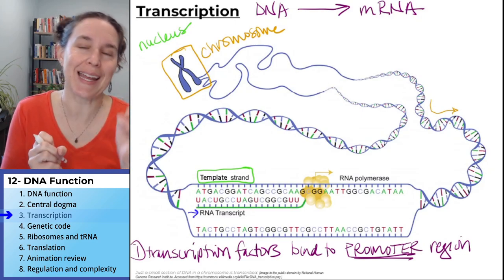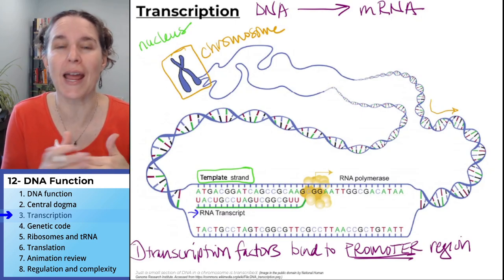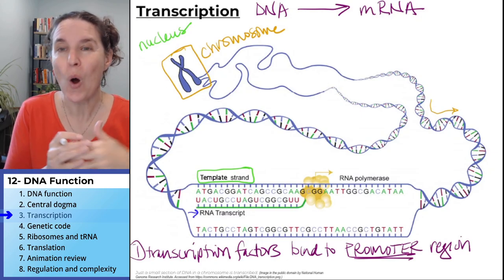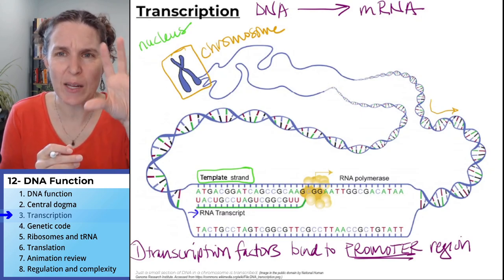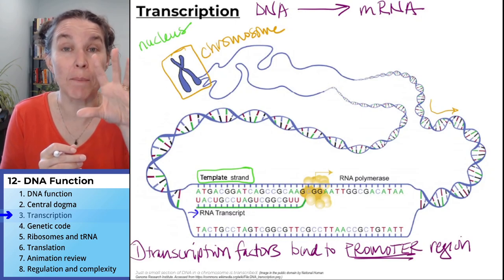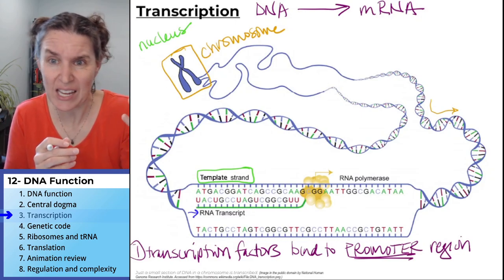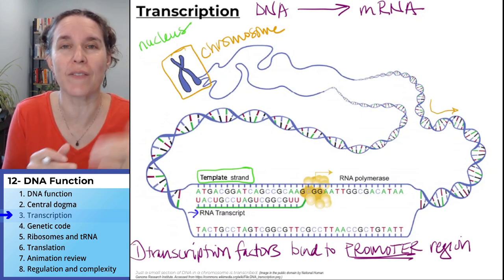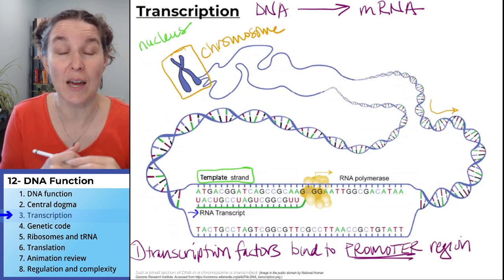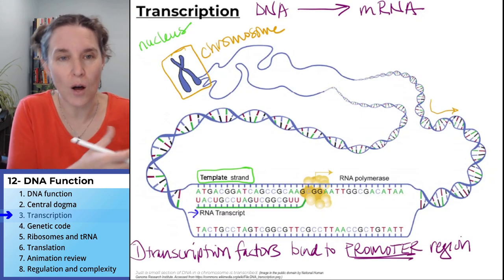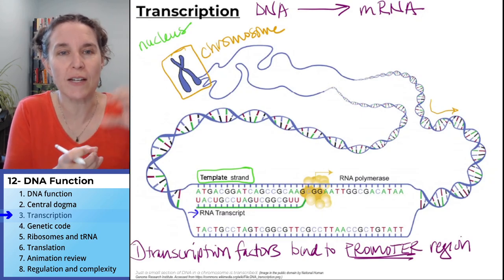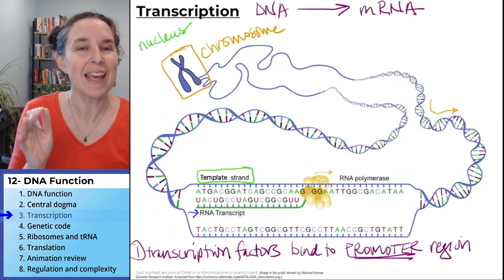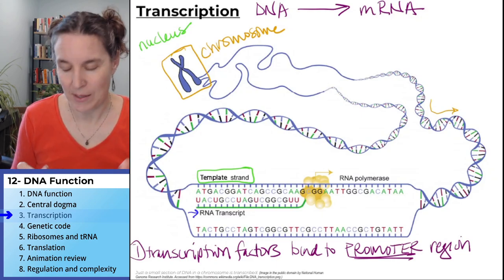We can actually enhance the activity of a promoter and cause more mRNA to be produced. Or we can decrease the expression of that gene by impacting that promoter region. All those transcription factors come in, they bind to the promoter region, and then RNA polymerase comes in.